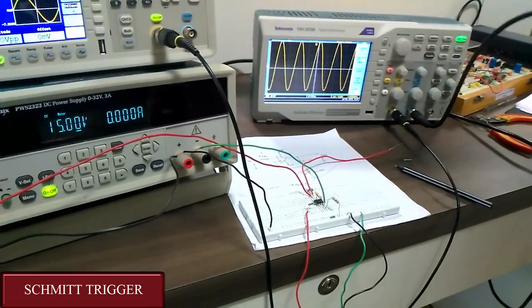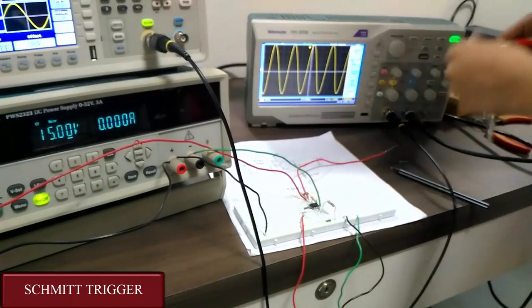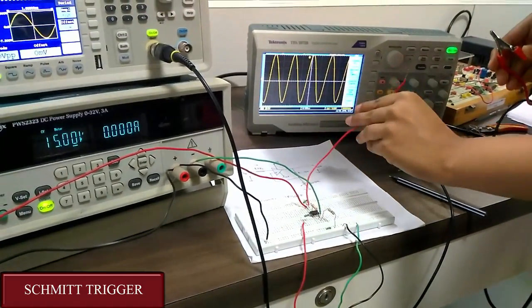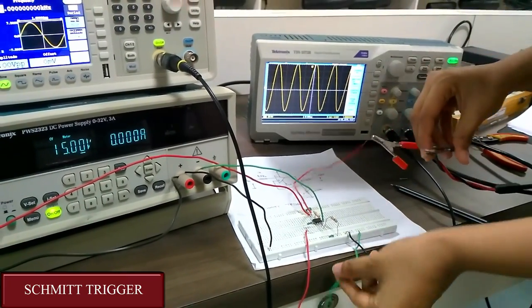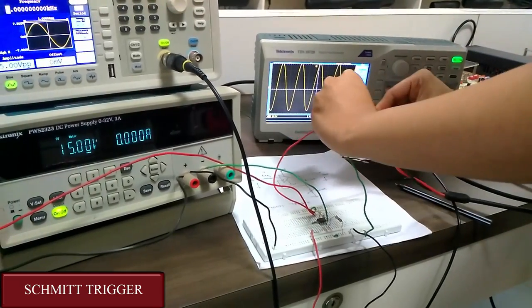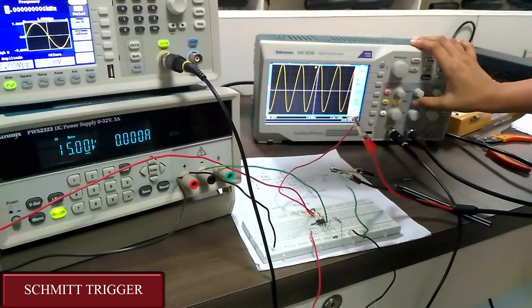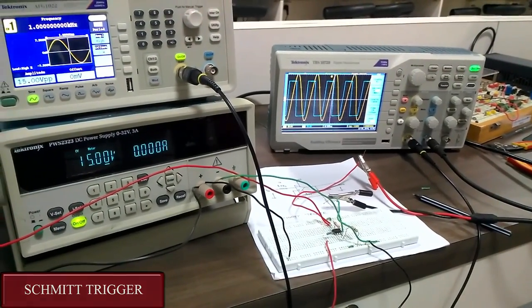Now, let's connect the output and see whether we are getting square wave or not. I have taken this wire from the sixth pin and I am connecting it and giving it to ground. As you can see, we are getting square wave.